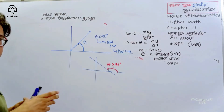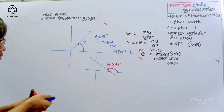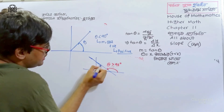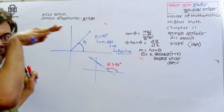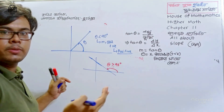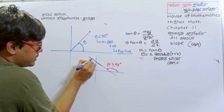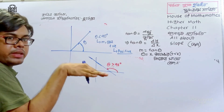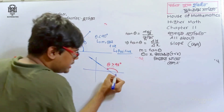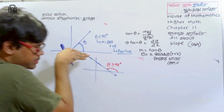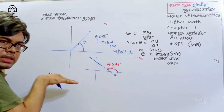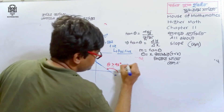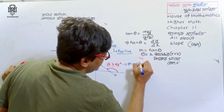If theta is greater than 90 degrees, we see that M is negative — the slope is negative when the line tilts to the left.